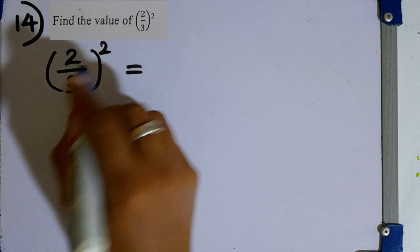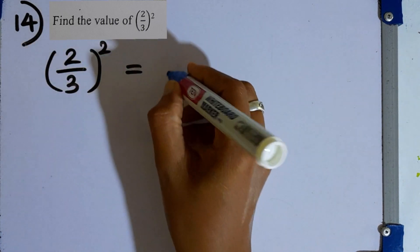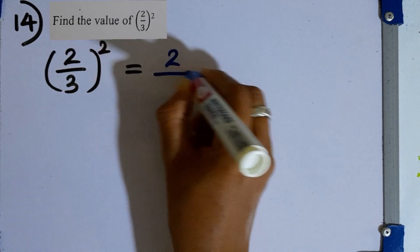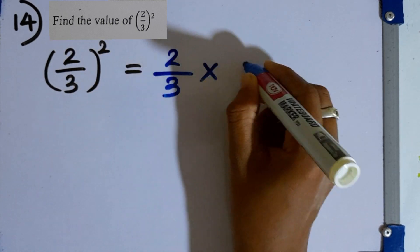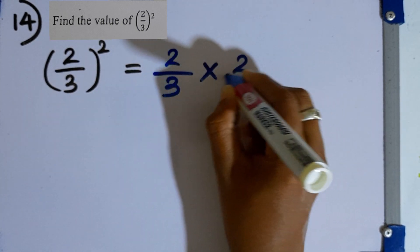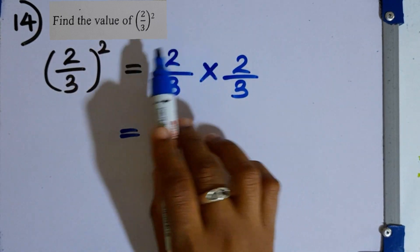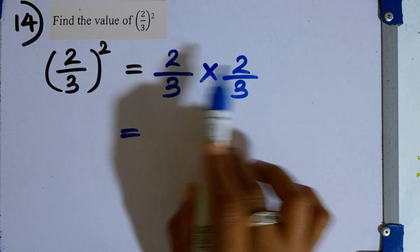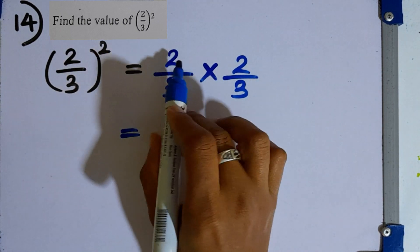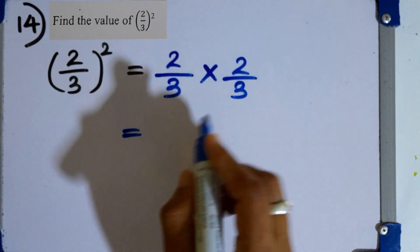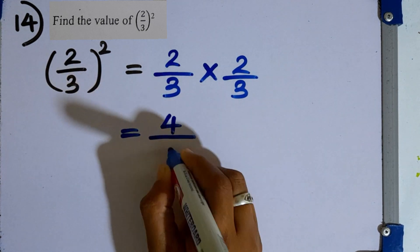Question number 14. As this is to the second power, we remove the power by writing 2 over 3 times 2 over 3. There are no simplifications, so multiply the two numerators and two denominators separately: 2 times 2 is 4, and 3 times 3 is 9. The answer is 4 over 9.